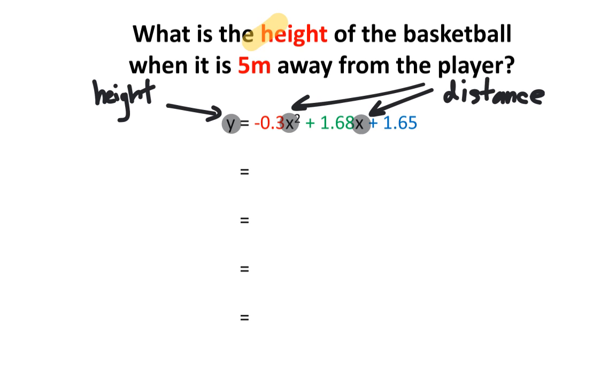Now, I'm ready to find the height of the basketball when it is 5 meters away from the player. Using our graph, we found the height of the basketball to be about 2.5 meters. We're going to do the exact same thing, but with an equation.